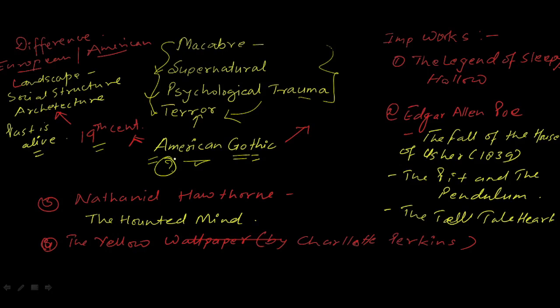American Gothic literature combines Gothic elements with American themes such as religious and wilderness anxiety, westward expansion, and racial tensions. So as you can see, it has Gothic elements. What are Gothic elements? First of all, we should know.